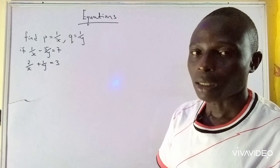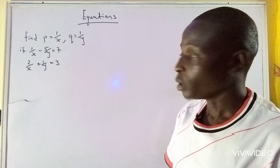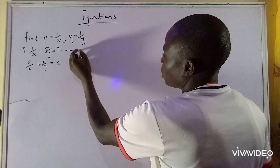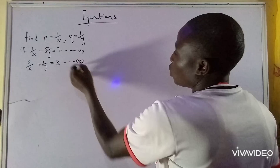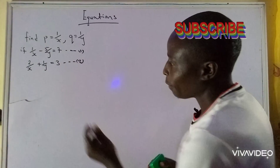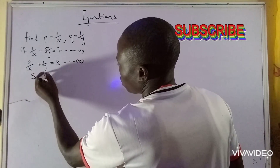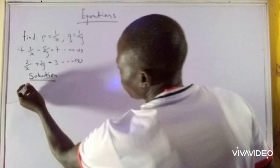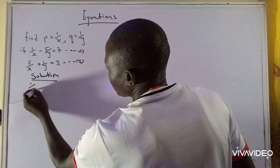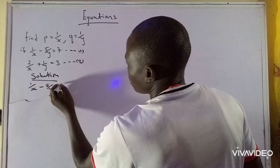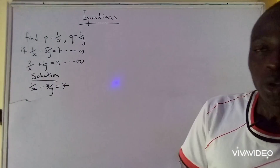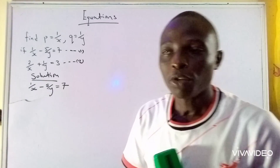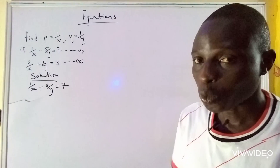This is a simultaneous equation, and the only way you can get to the final answer is by the substitution method. So this is equation 1 and this is equation 2. We start from equation 1. Equation 1 says: 1 over X minus 5 over Y equals 7. What we need to do is pick the LCM of X and Y. The LCM of X and Y is XY.